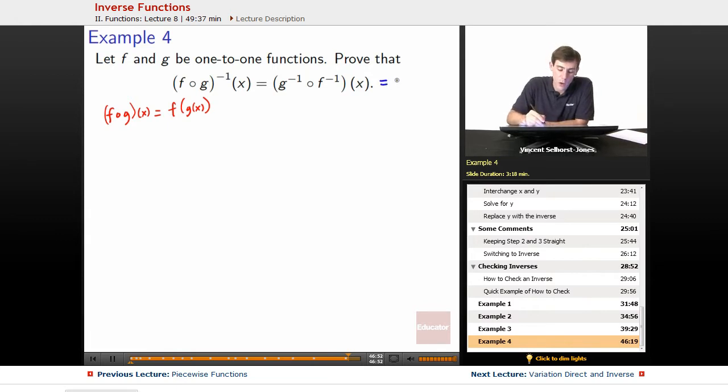So what we want to show is that g^(-1)∘f^(-1) would be g^(-1) on f^(-1) on x.